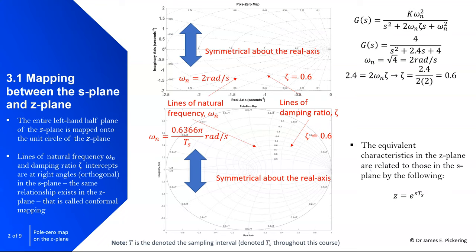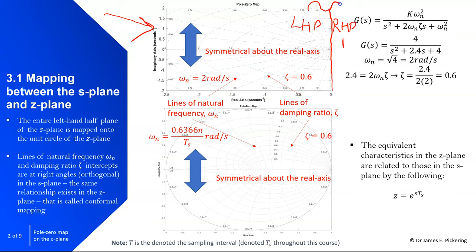Recalling from continuous time systems modelling and control, we have the S-plane, which consists of two halves: the left half plane and the right half plane. The left half plane is where you want to locate your poles for a stable system. For an unstable system, you'd locate them in the right half plane. Along the imaginary axis is a marginally stable system — effectively undamped, with no damping.